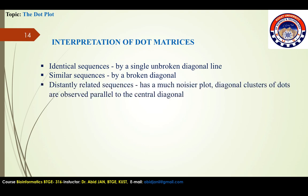A pair of distantly related sequences with fewer similarities has a much noisier plot. In this case, diagonal clusters of dots are observed parallel to the central diagonal line, separated by a distance that represents the number of insertions required to bring the sequences into the correct register.